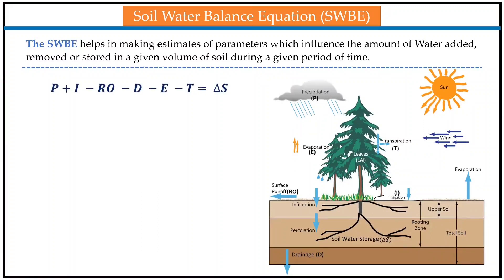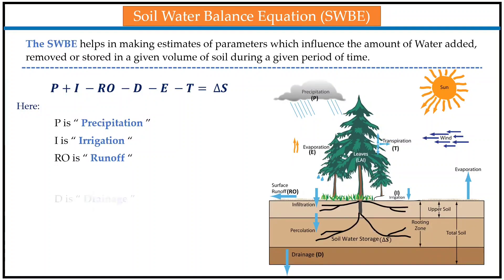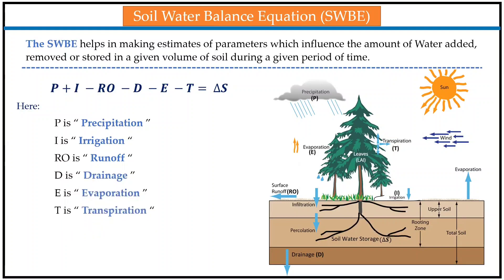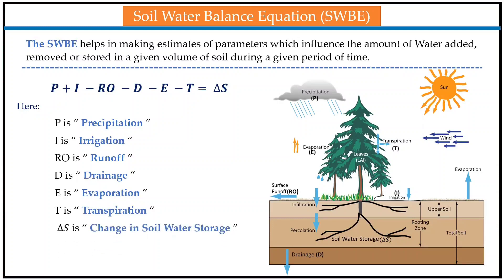Here is the equation that defines soil water balance — it represents the parameters which contribute to soil water storage. The first parameter is precipitation; as we can see in the figure, precipitation is the rain that adds water to the soil. The second parameter is irrigation, another way we are able to add water to soil. Further, we have runoff, drainage, evaporation, and transpiration — these are the parameters due to which there is subtraction of water from the soil, and that's how moisture is lost from the soil.